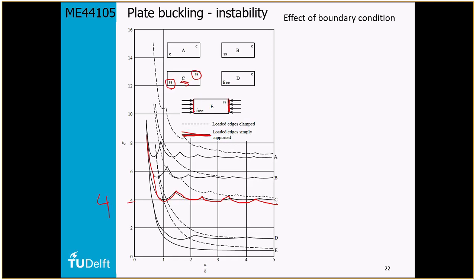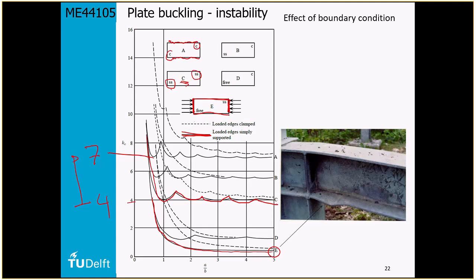What happens if you clamp both sides? Then you end up with position A on the curve, with a buckling stiffness of seven — you can almost double the buckling limit by ensuring stiff sides. On the other hand, if you have a free edge — three sides simply supported — you end up with curve E. That happens for example with a flange, and Eurocode and AISC limits check the buckling of the flange and the buckling of the web based on these simple assumptions.